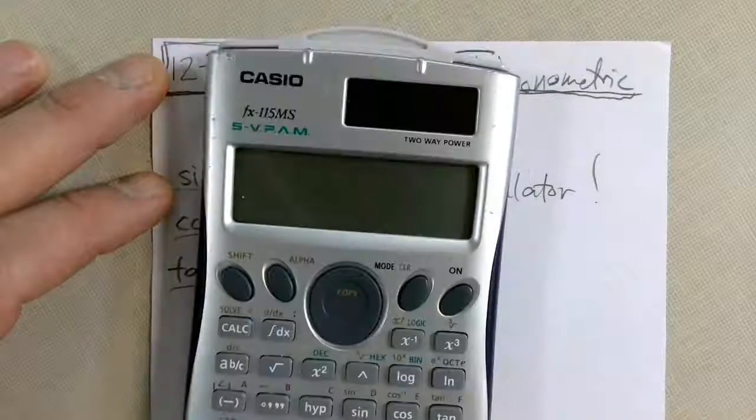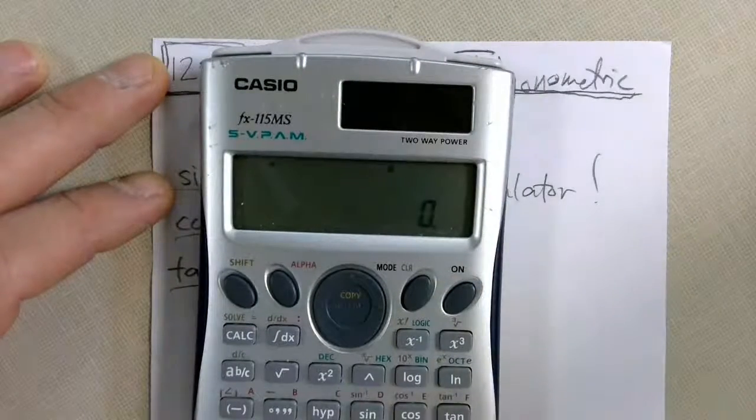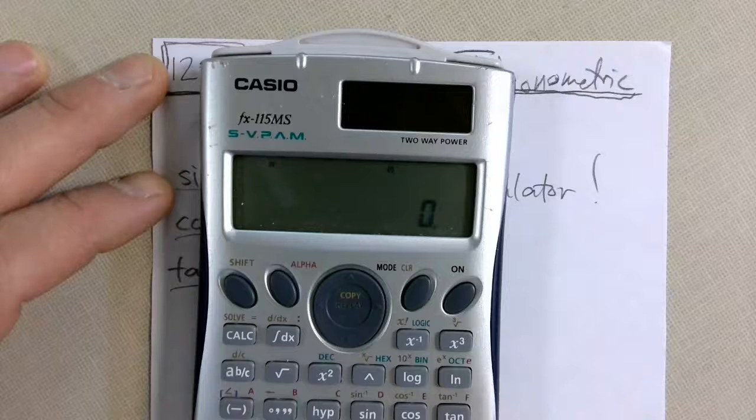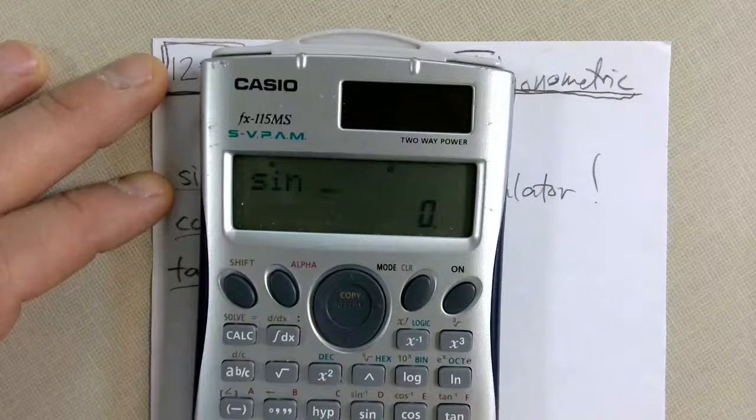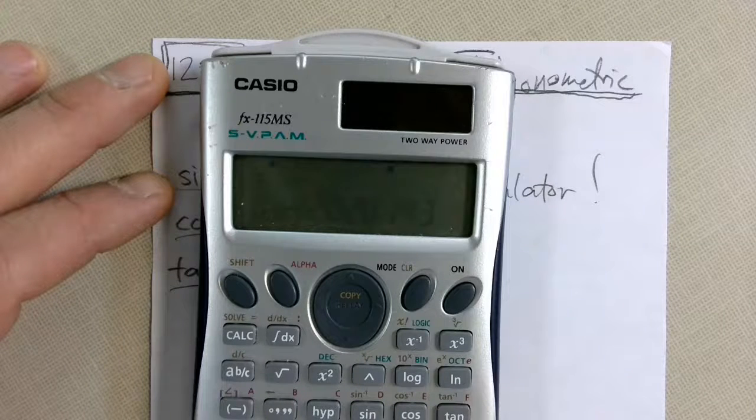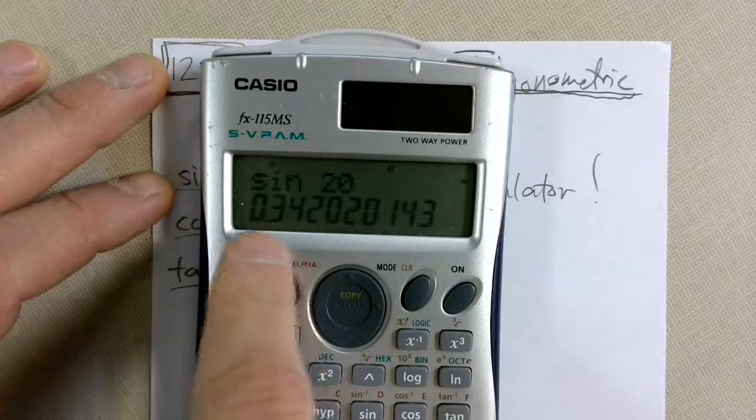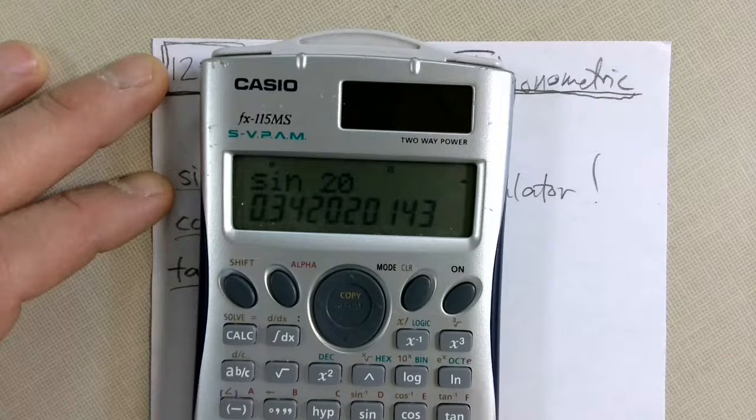If I want to find the sine of a number, it's as simple as plug in, push in the button, sine, and let's take the sine of 20 degrees. It's going to be 0.342. So, you just plug it in like that. It's that simple.